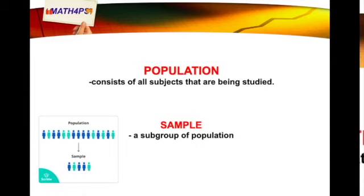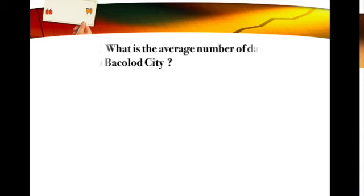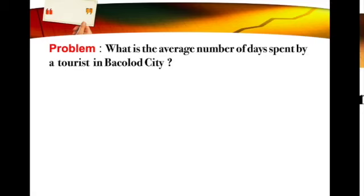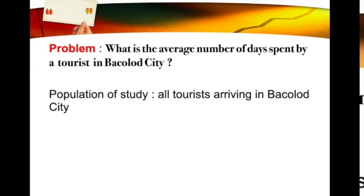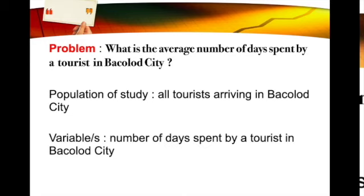What is the difference between a population and a sample? A population consists of all subjects being studied, while a sample is a subgroup or subset of a given population. For example, in the question 'What is the average number of days spent by a tourist in Bacolod City?' — the population is all tourists arriving in Bacolod City, and the variable is the number of days spent by a tourist in Bacolod City.